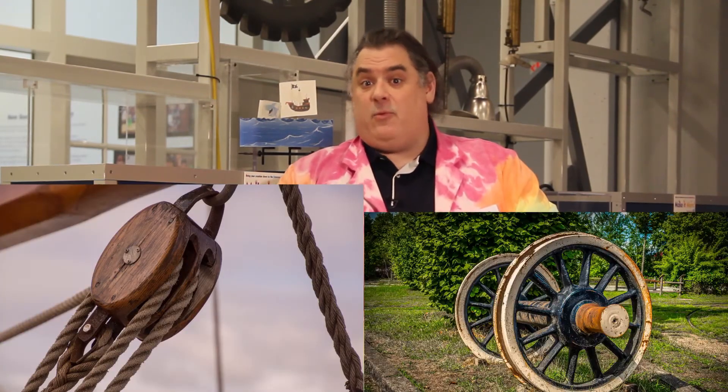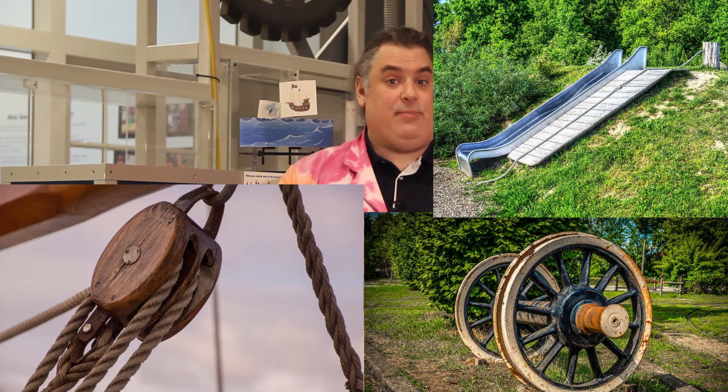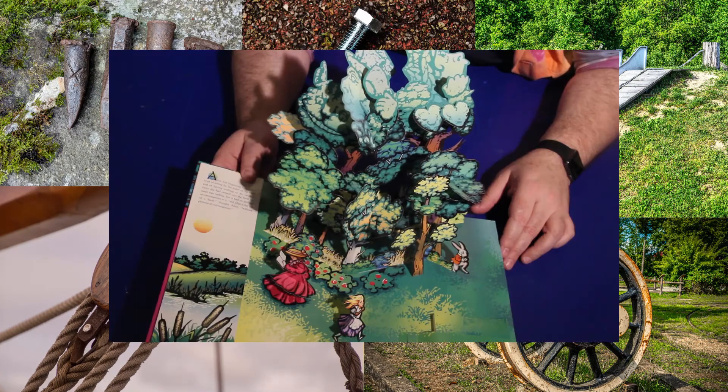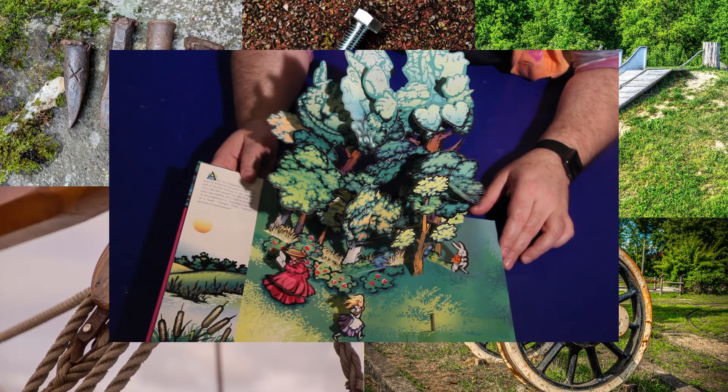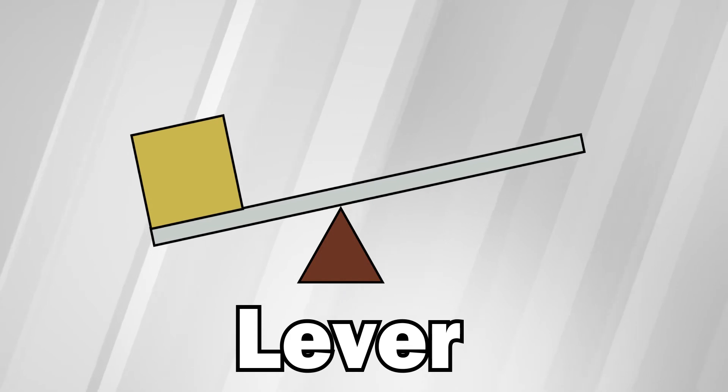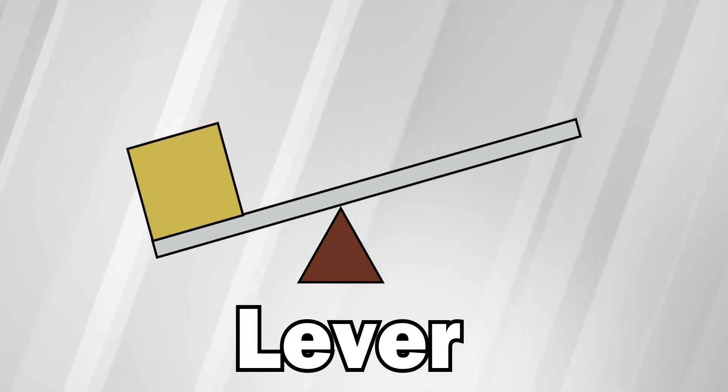Pulleys, wheel and axle, inclined planes, wedges, screws, and levers, which are the primary simple machine of pop-ups. A lever, and yes, I know some people say lever, but I'm from Texas, so I say lever, y'all, has two main parts.